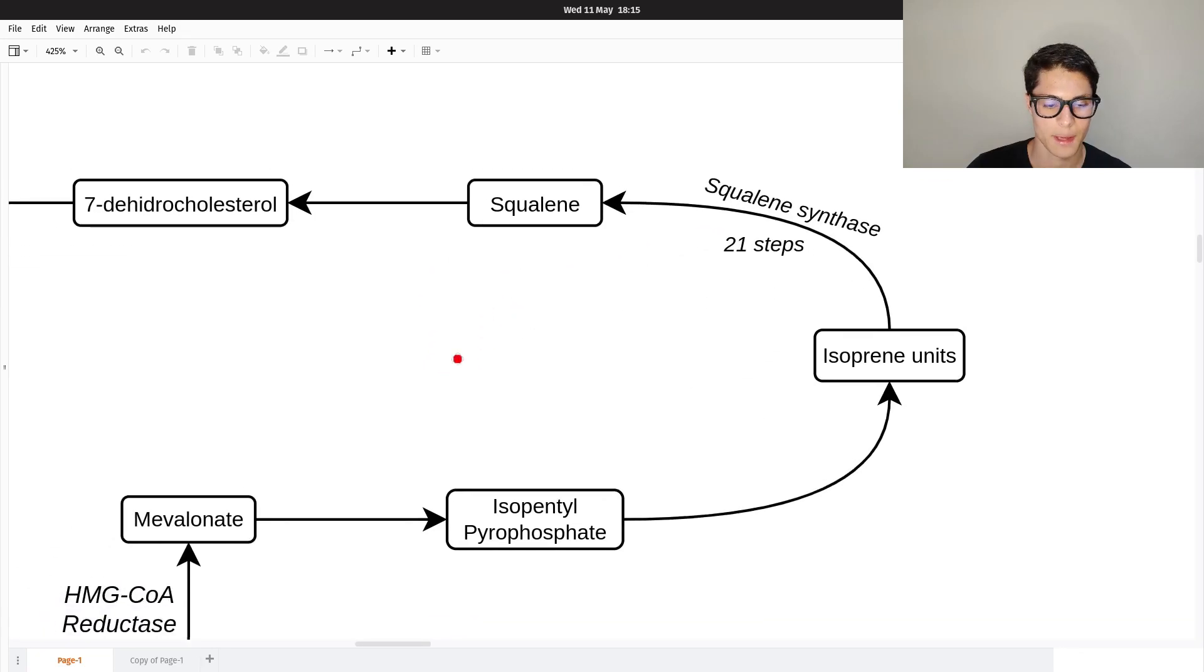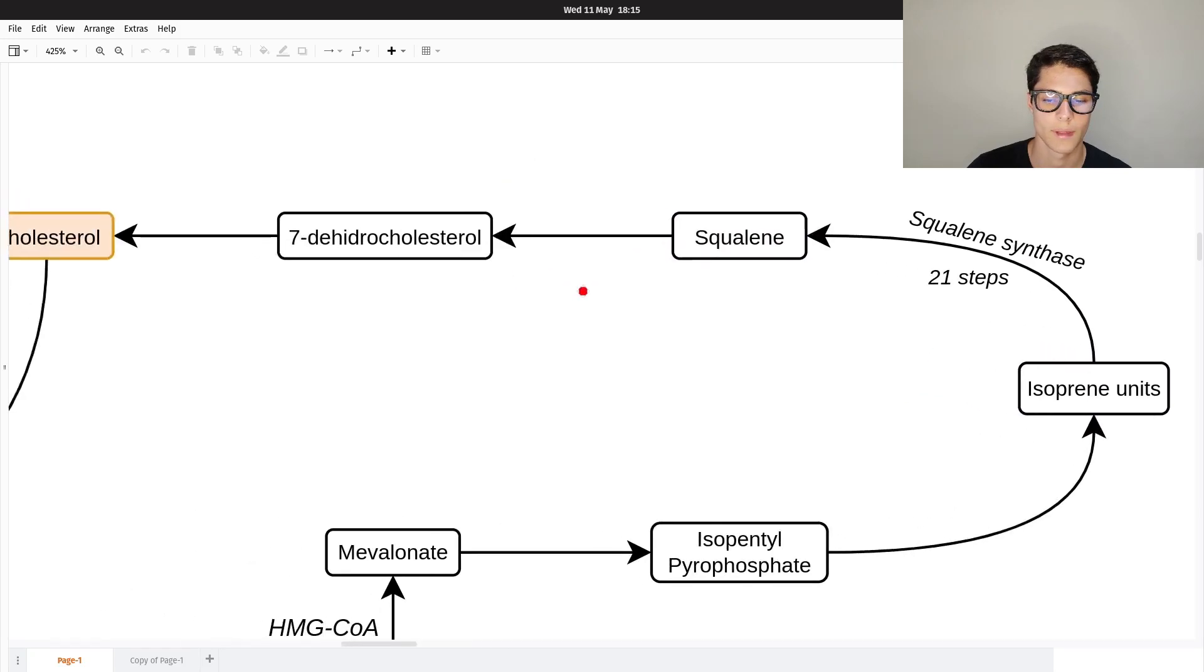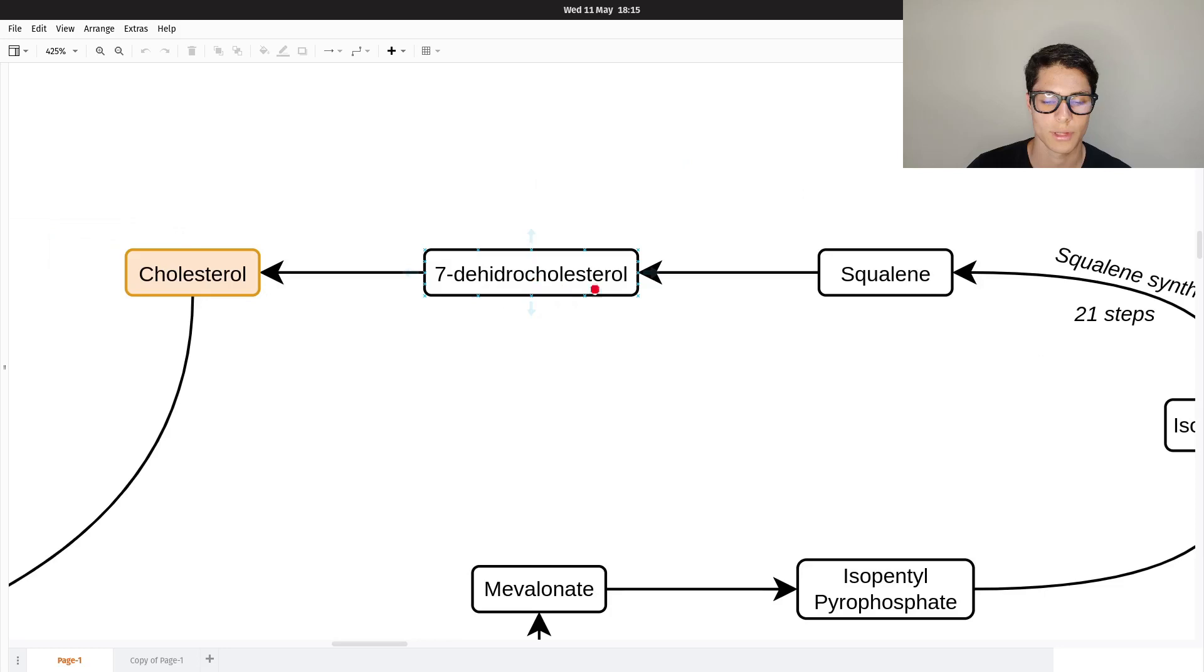These are the main things you need to know about the synthesis of cholesterol: from mevalonate to isopentenyl pyrophosphate, isoprene units, squalene, then from squalene to 7-dehydrocholesterol, and then to cholesterol.